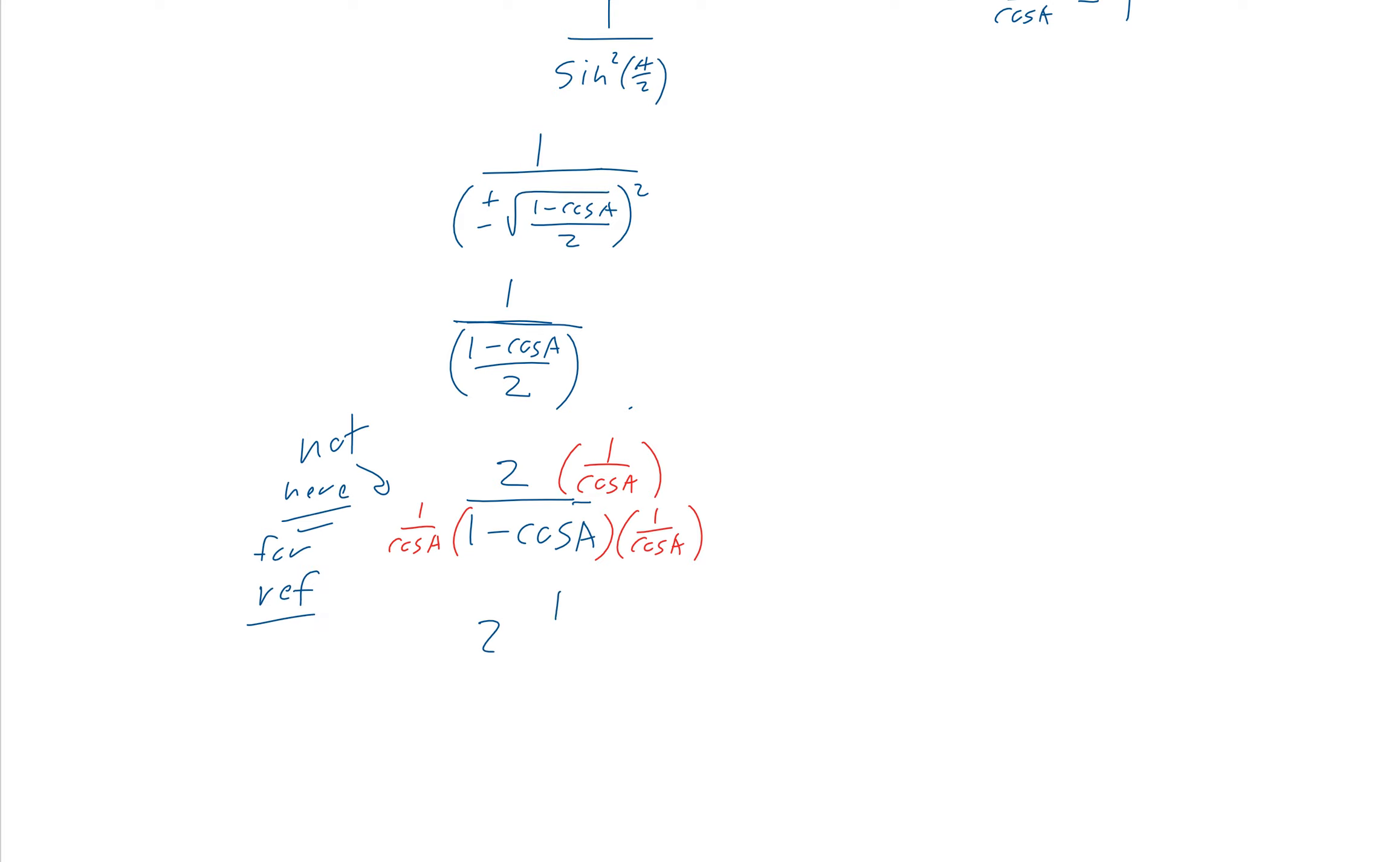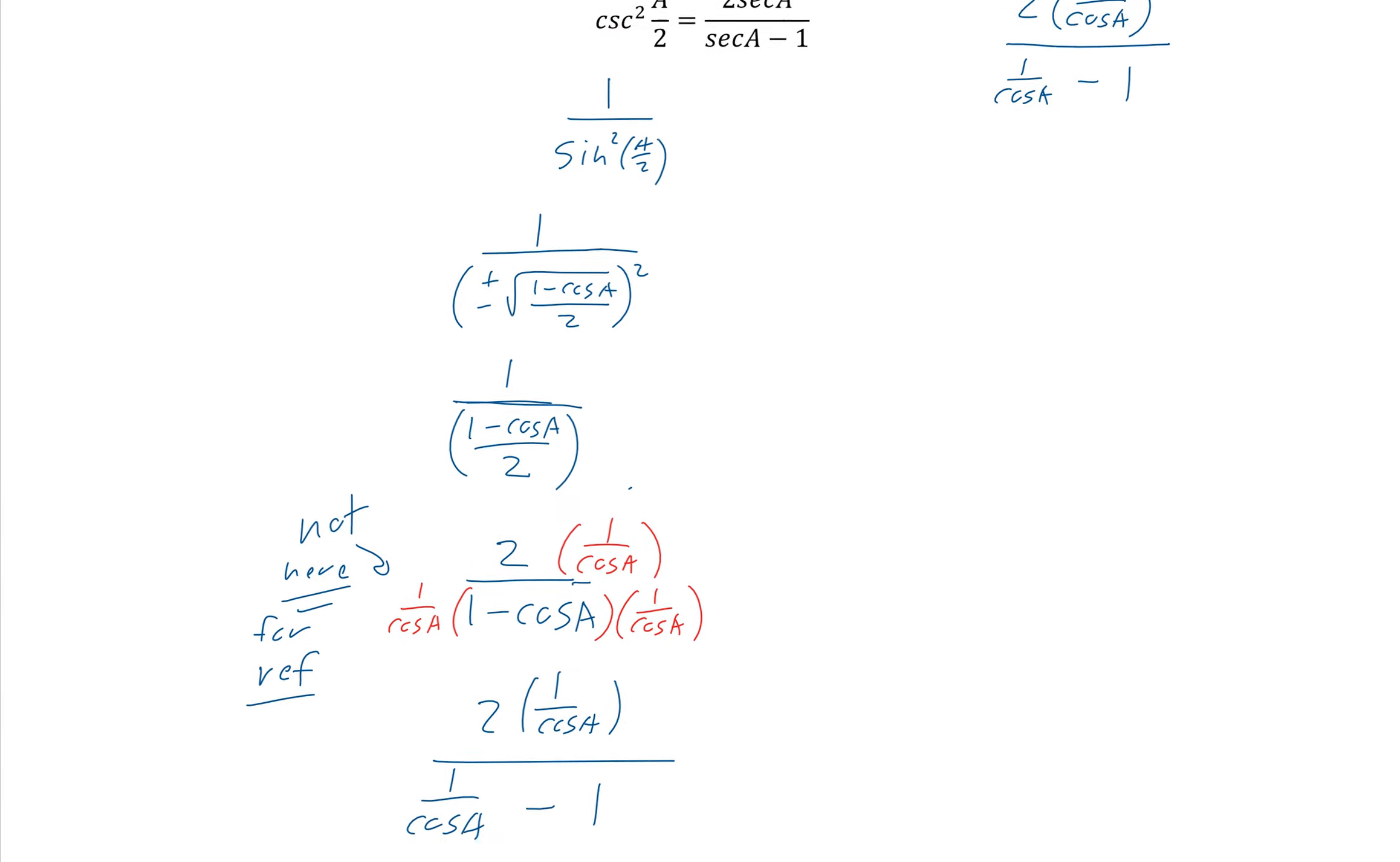So we end up with 2, 1 over cosine a. And then on the bottom, 1 over cosine a. And then as we distribute that, we get 1. We're getting there, right?